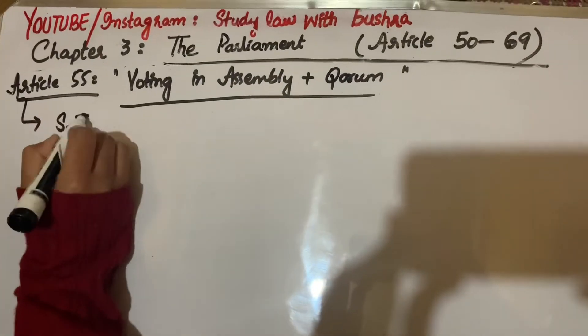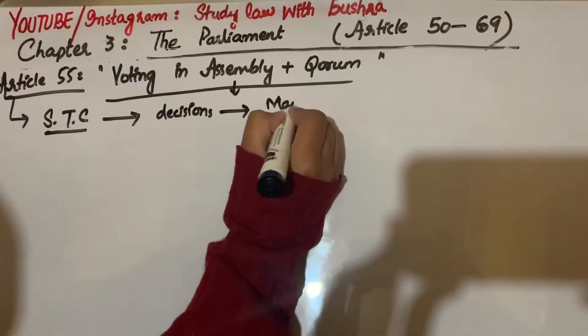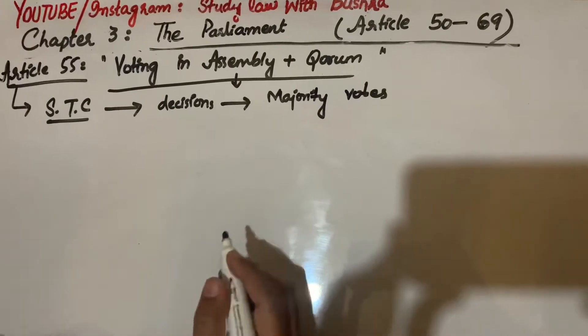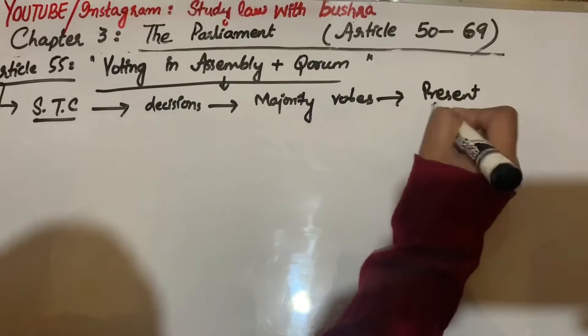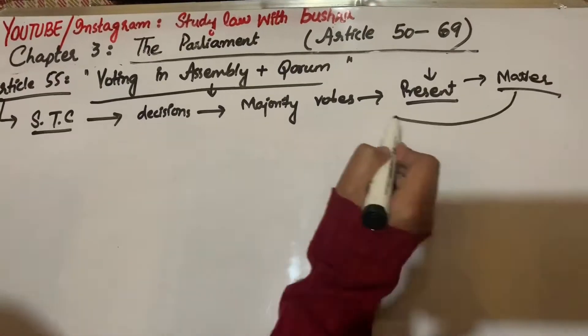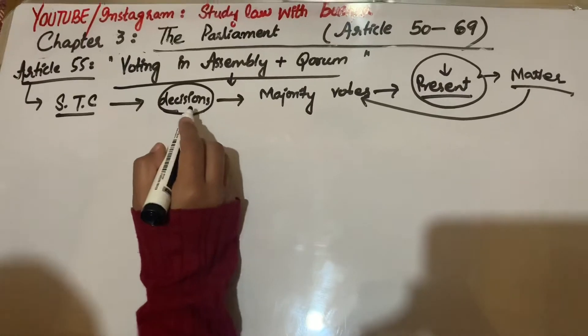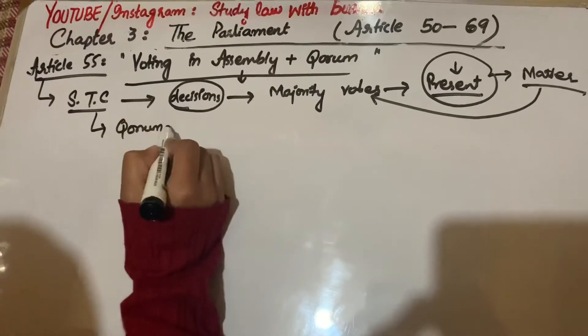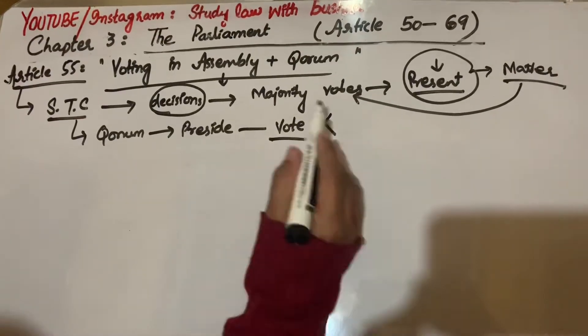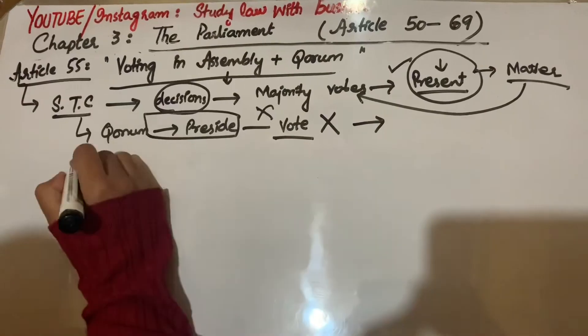Next is Article 55: Voting in Assembly and Quorum. Subject to the Constitution, all decisions on voting in National Assembly are based on majority votes. If someone gets majority votes from those present, that matter's decision will be considered the final decision.